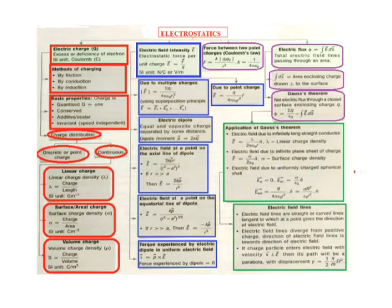Next: induction. If a charged body is brought near an uncharged body, the charged body will attract opposite charge and repel similar charge present in the uncharged body. As a result, one side of the neutral body — the side closer to the charged body — becomes oppositely charged, while the other side becomes similarly charged. This process is called electrostatic induction.